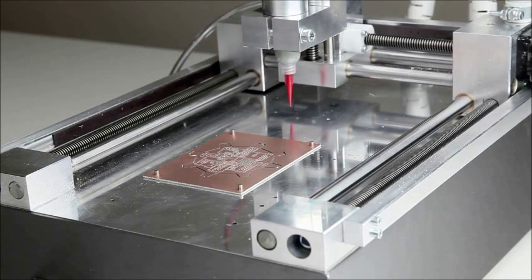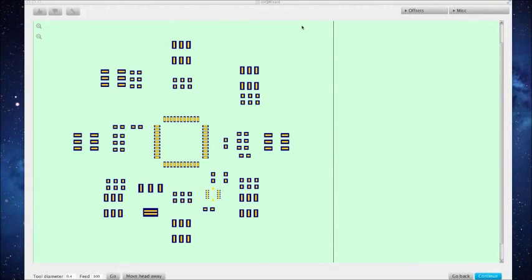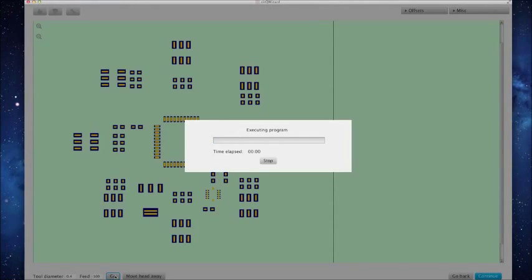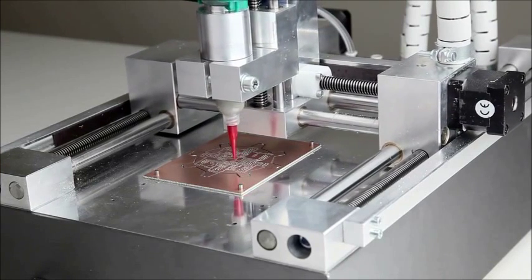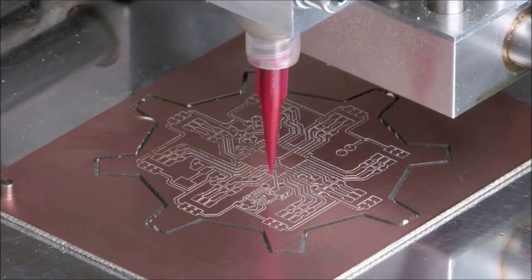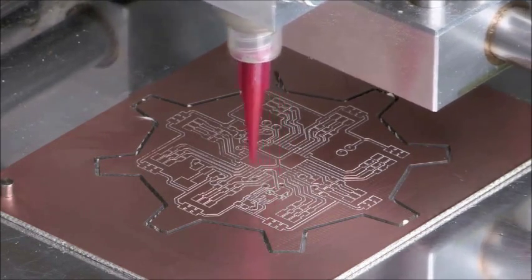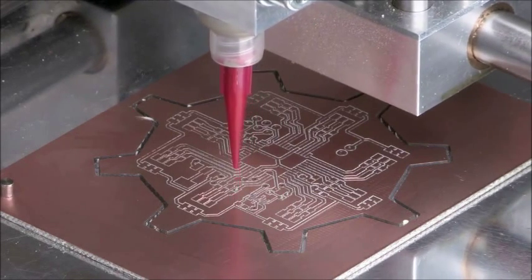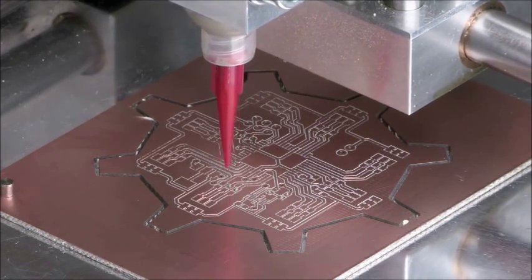Before placing SMD components, solder paste needs to be dispensed on the pads. So now there is a syringe with solder paste instead of spindle in the machine's head. This screen shows where the paste is going to be dispensed. Click on the go button starts dispensing. Sometimes a pad can be missed. It's not a big deal. We will fix it later.